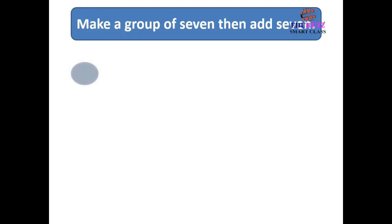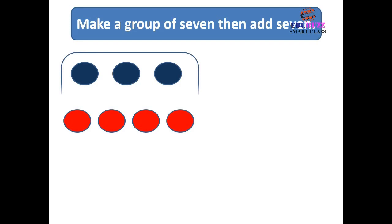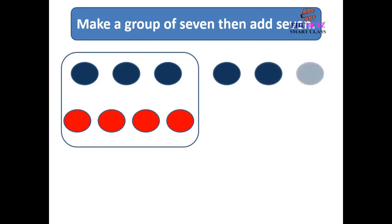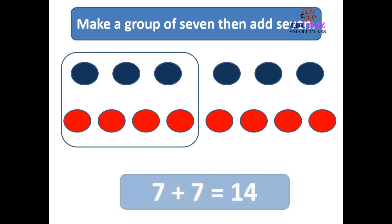Make a group of 7 then add 7. 7 plus 7 is equal to 14.